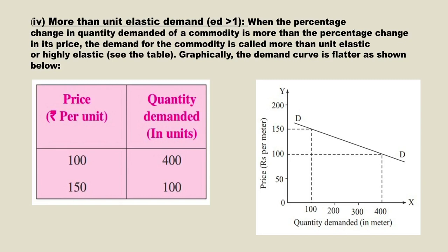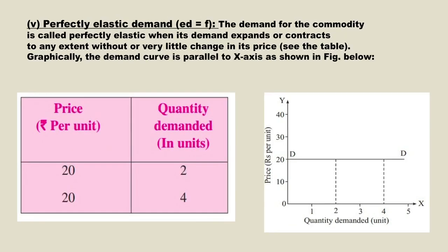The last type is perfectly elastic demand, where elasticity of demand is infinite. The price remains the same, but the quantity demanded increases or decreases. The table shows the price of the commodity remains at rupees 20 per unit, but the quantity demanded increases from 2 to 4. These are the five different cases of elasticity of demand.